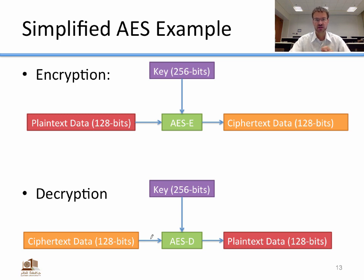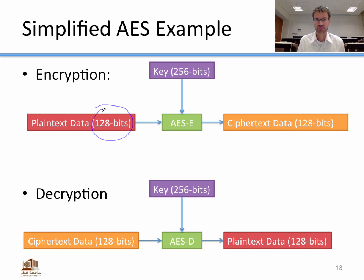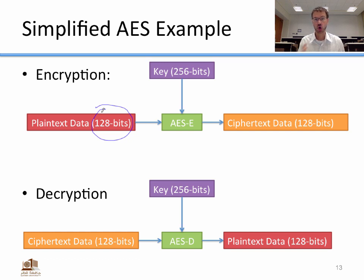An important note: block size matters. You can only use a block cipher to encrypt something exactly the size of the block. If your data is larger than 128 bits, you break it into 128-bit pieces and encrypt each separately. If your data is smaller than 128 bits, you add padding — extra bits — to bring it up to the required block size.